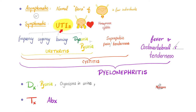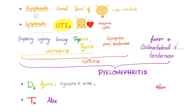What are the symptoms? It depends on the type of urinary tract infection. If it's just in the urethra, you might get frequency, urgency, burning, dysuria, and pyuria — the presence of white blood cells or pus in the urine, because pus comes from neutrophils. If you have cystitis, you get all those symptoms plus suprapubic pain and tenderness. If you have pyelonephritis, you get all of those plus fever and costovertebral angle tenderness.